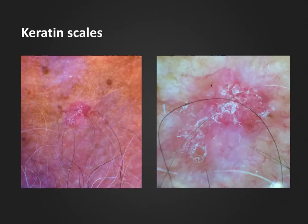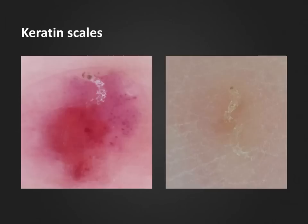Keratin can also be found on the surface of lesions. Here we see a solitary pink or red lesion surrounded by sun-damaged skin with scales on the surface. With dermoscopy, we can visualize the typical white or sometimes yellowish-white scales in combination with clusters of so-called glomerular vessels, seen at 2 o'clock. This is typical for Bowen's disease. We will talk more about scales and keratin when we discuss keratoacanthoma and squamous cell carcinoma in part 3 of this podcast series.